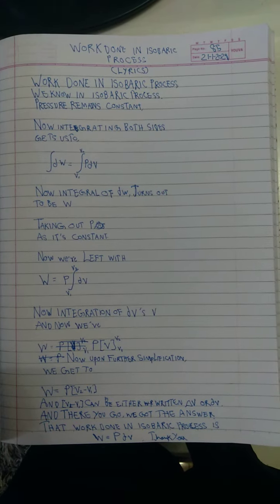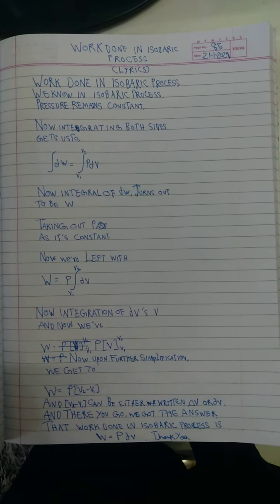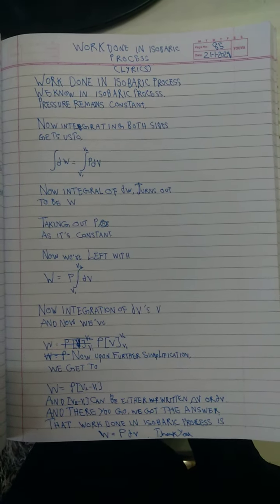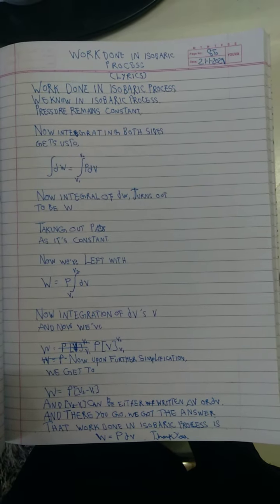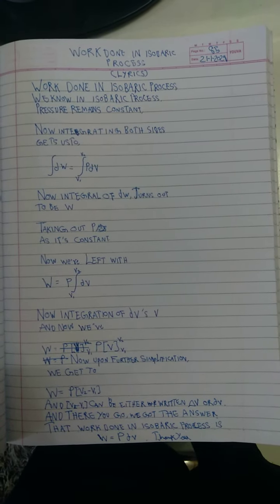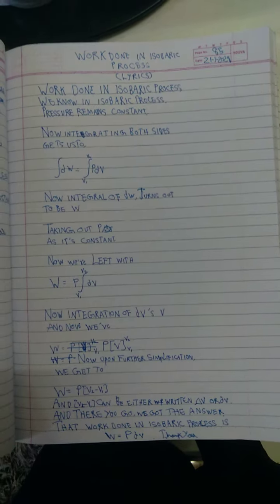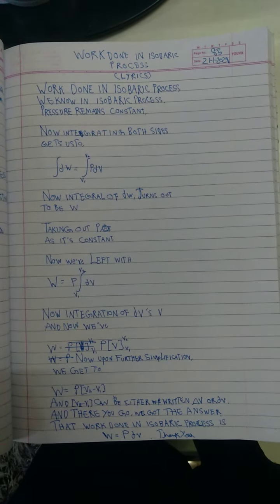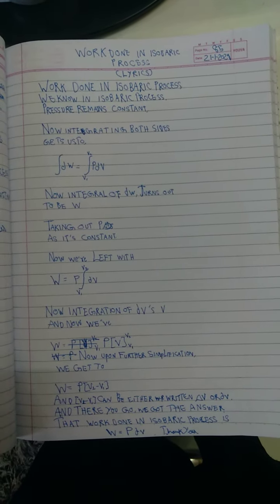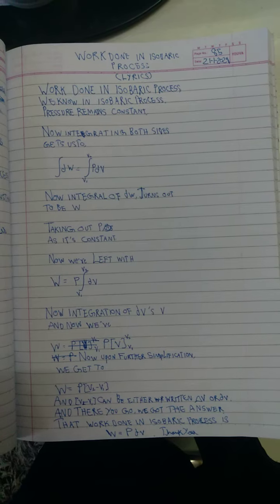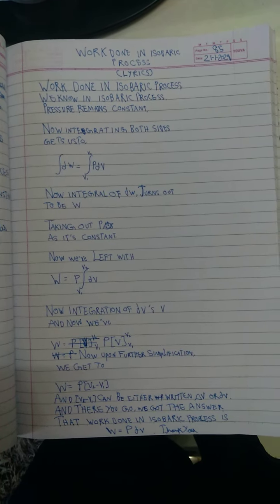Work done in isobaric process. We know in isobaric process pressure remains constant. Now integrating, which gets us to the integral of dw equal to the integration of pdv with limits from v1 to v2.